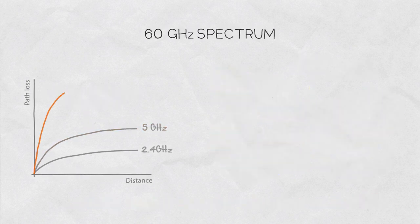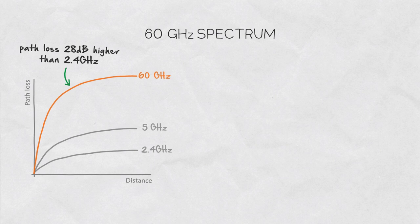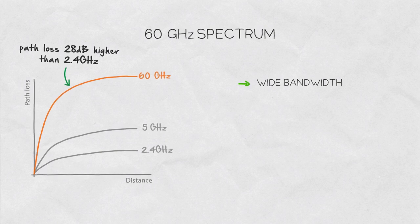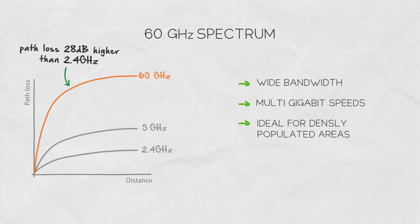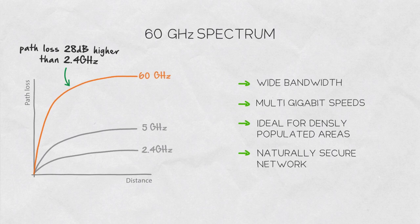At 60 GHz, the path loss is about 28 decibels, or about 700 times higher than at 2.4 GHz. Combined with the wide bandwidth available, the possibilities for future multi-gigabit networks are vast, but only in densely populated areas due to the shorter achievable distances, which also makes for a naturally high security network.